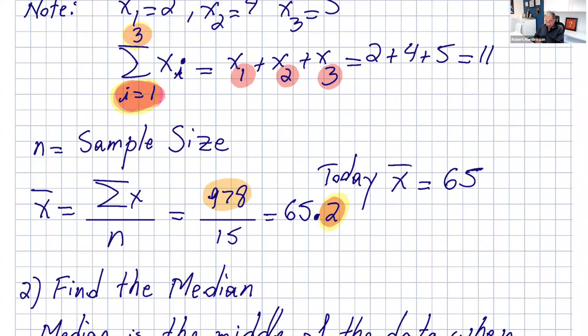If you add all the numbers, you get 978. The sample size is 15, so you get 65.2. You always round off the mean to the nearest tenth, one number after the decimal point. But today we're going to just pick 65 because it's easier to see in the calculations.